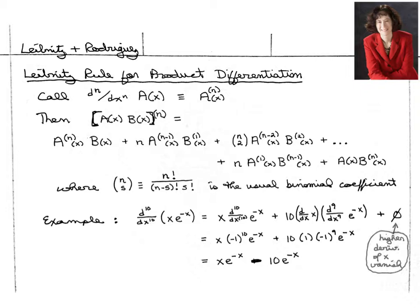and it's straightforward to say taking multiple derivatives of e to the minus x just gives you factors of negative 1 multiplying e to the minus x, and one quickly ends up with this answer.